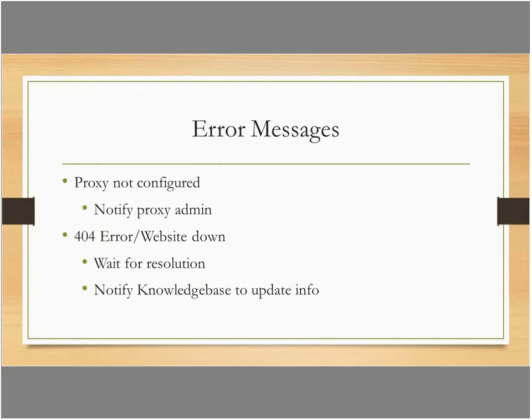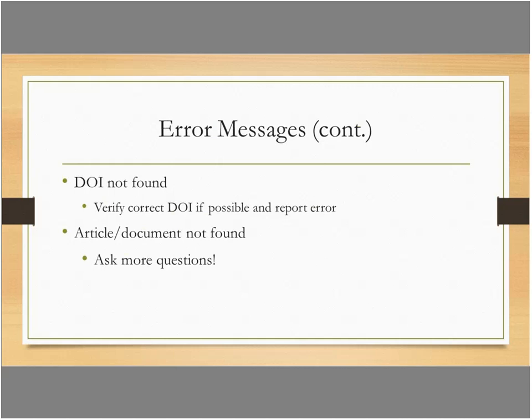If there is an error message, you examine things to see what needs to be done. Common error messages include proxy not being configured correctly—a simple fix: notify the proxy admin and they update the EZproxy stanzas. Sometimes you'll get a 404 error or website-down error, which could be technical difficulties on the vendor side or because link structures have changed without being communicated to the knowledge base. If it's just technical difficulties, wait for resolution; if it's a systematic change, notify the knowledge base. Sometimes you'll get a DOI not found message—verify the correct DOI and report to whoever had the incorrect one. And finally, you'll get an 'article not found' message.